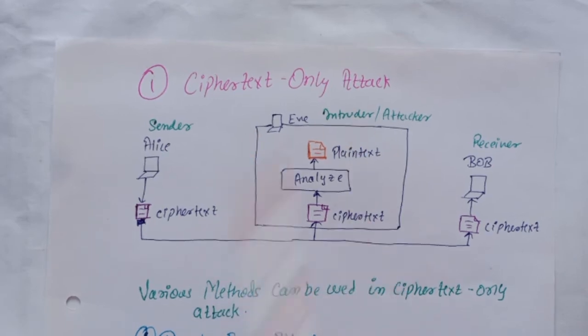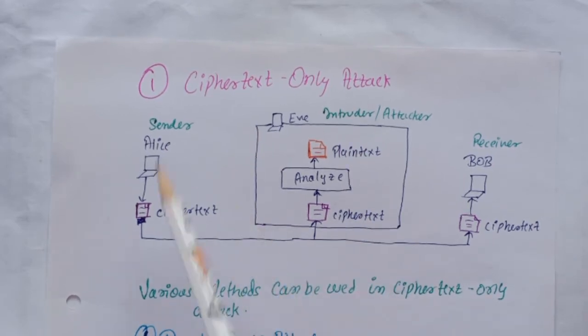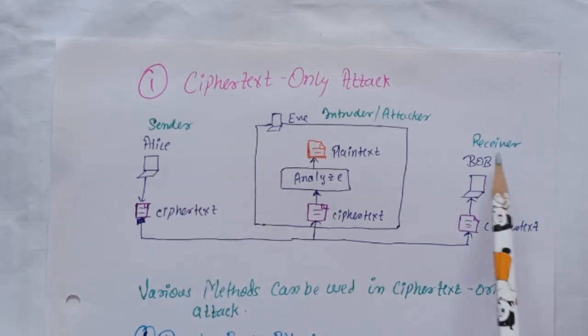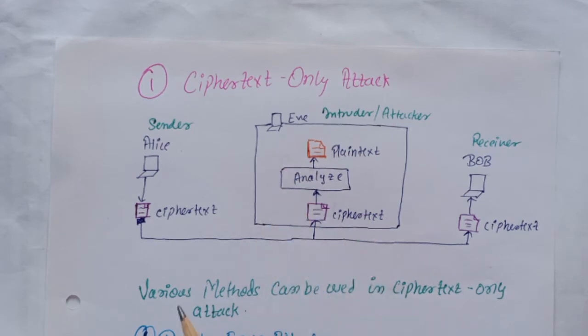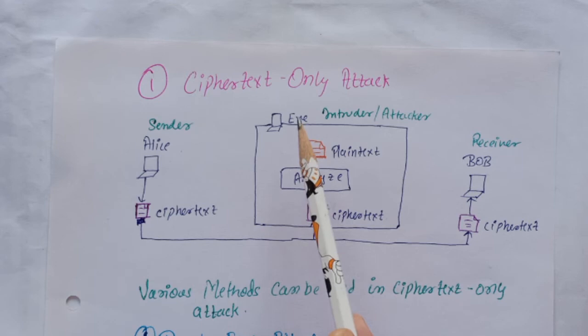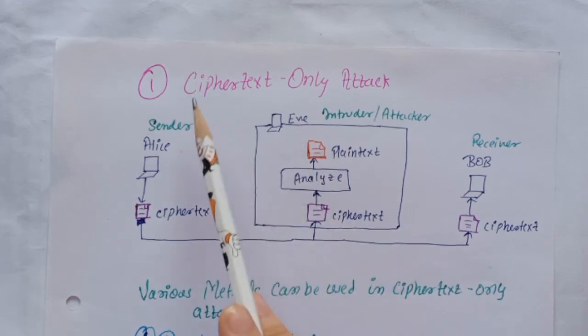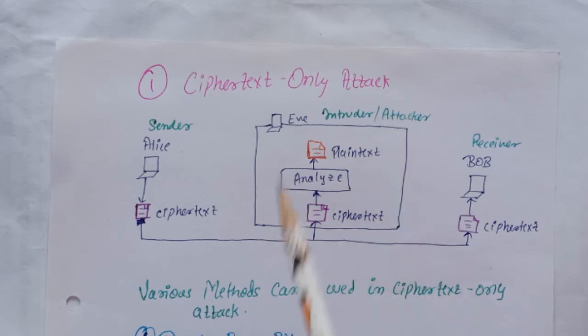Let us start with ciphertext only attack. It will be easy to understand using a diagram. Here Alice is the sender, Bob is the receiver, and Eve is the intruder. We assume that the intruder Eve knows the algorithm. As the name suggests, ciphertext only attack means Eve has access to some of the ciphertext.